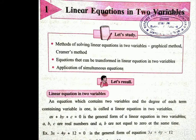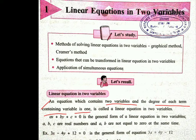Students, you should know what is meant by linear equation in two variables. Here is the definition: an equation which contains two variables and the degree of each term containing variable is 1, is called a linear equation in two variables.